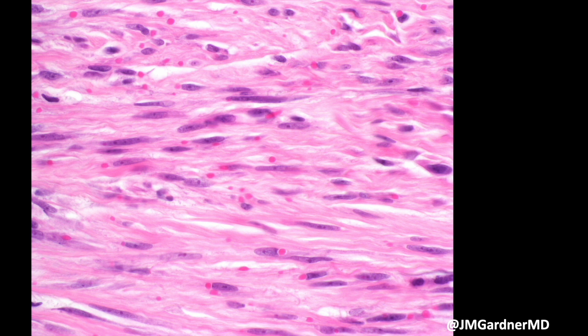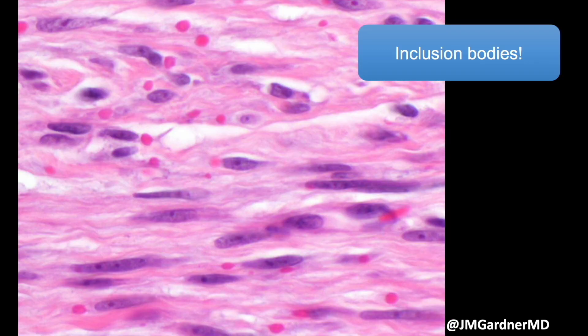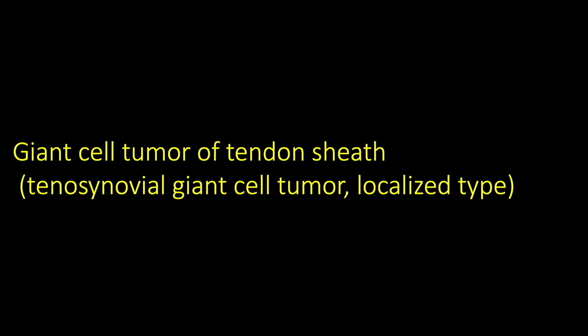One thing to be aware of: occasionally other bland spindle cell tumors on acral skin have scattered red cells that can mimic these. But in inclusion body fibromatosis, once you see the inclusion bodies, they're everywhere and it becomes clear what you're dealing with. So on the hands and feet, look for those inclusion bodies.